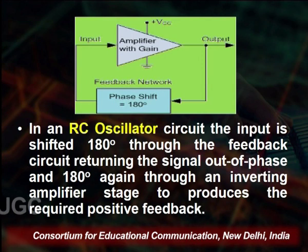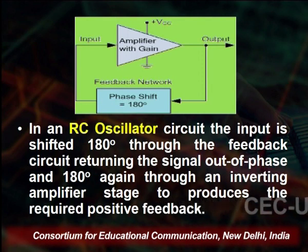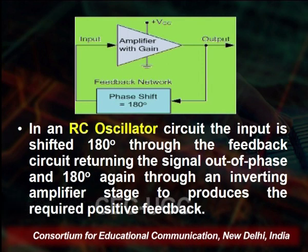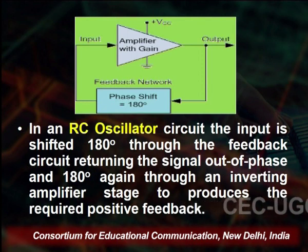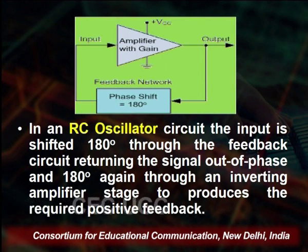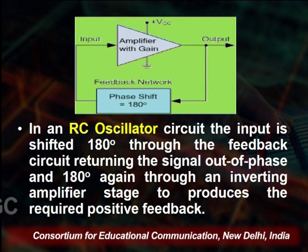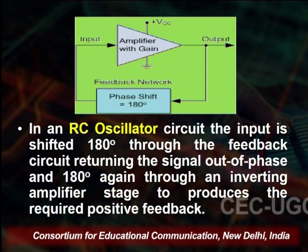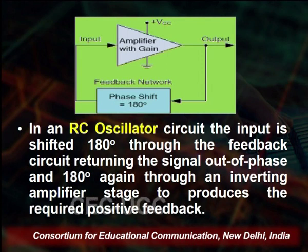Looking at the circuit on screen, we have an amplifier with gain where the input is derived from the output through a phase shift of 180 degrees. The voltage supplying a particular value is supplied to the circuit, and the output feeds back through the feedback network with a phase shift of 180 degrees back as input to the amplifier, and this cycle continues.